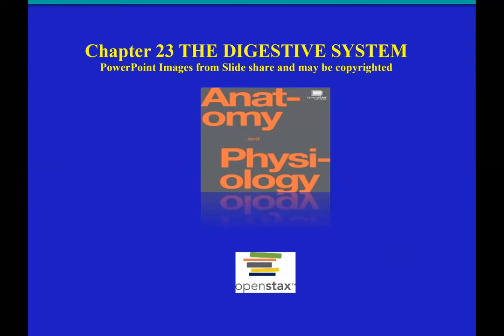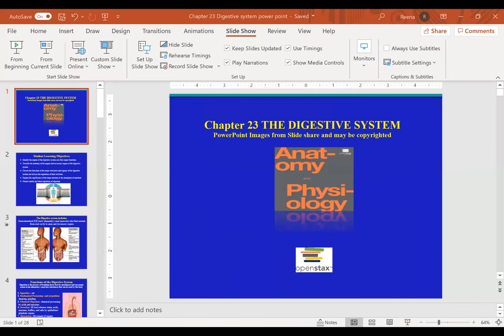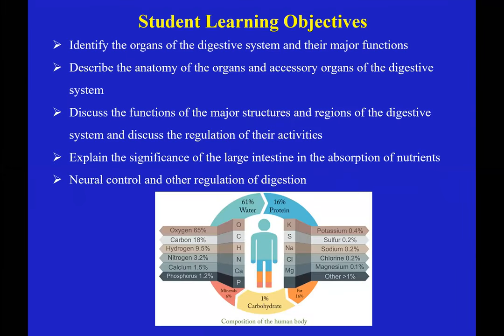Chapter 23, The Digestive System. The main learning objectives, just like any other chapter, is for us to master the anatomy and physiology of that system. We'll be identifying all the organs that make the digestive system and their main function. We will also study some accessory organs that are required for digestion. We'll study how the activity is regulated.